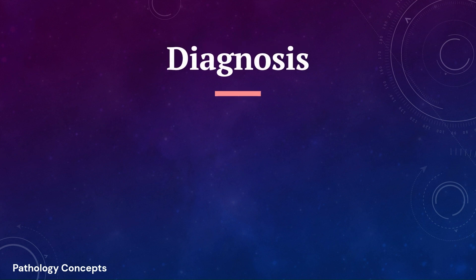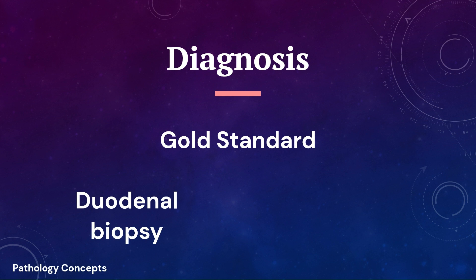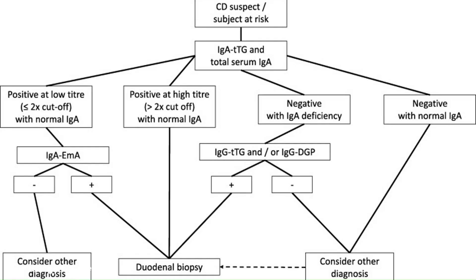Now let's understand how to diagnose celiac disease. The gold standard for celiac disease diagnosis is represented by a combination of two tests: first is duodenal biopsy and second is serological test. This picture shows the step-by-step procedure to diagnose celiac disease.